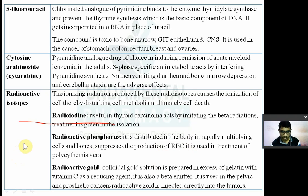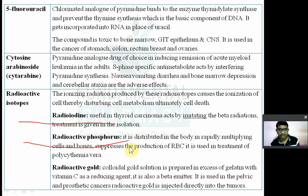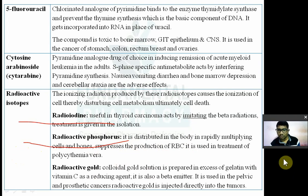Radioactive phosphorus is distributed in the body in the rapidly multiplying cells of bones. It suppresses the production of RBCs and is used in the treatment of polycythemia vera.